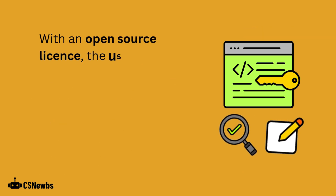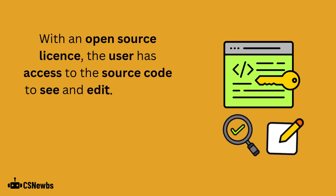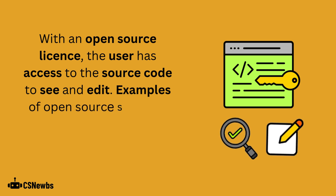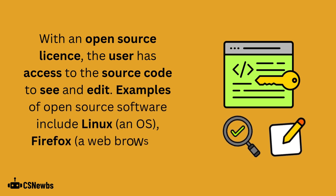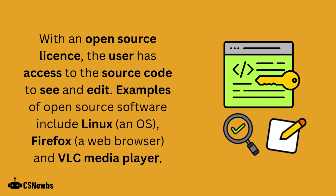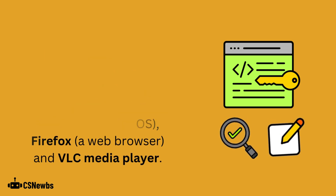With an open source license, access is provided to the source code for the user to see and edit. Examples of open source software include Linux, Firefox, and VLC Media Player.